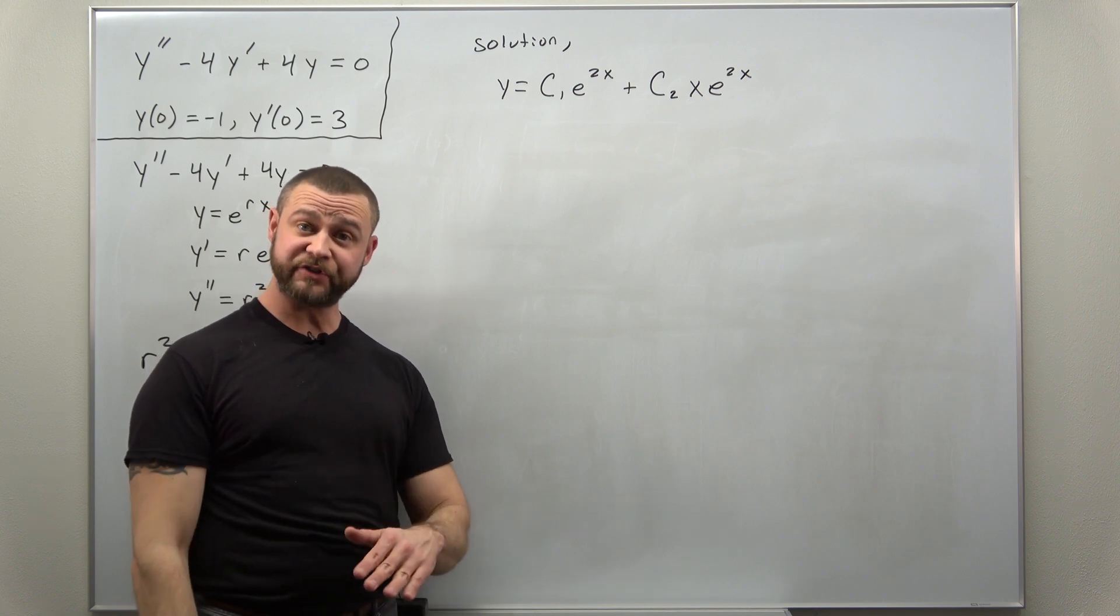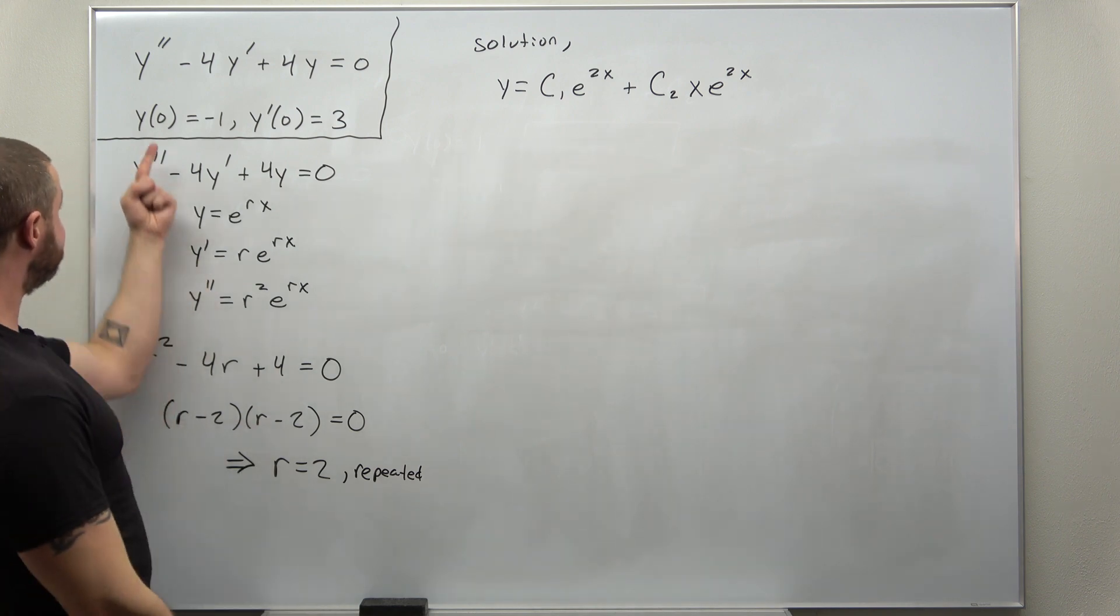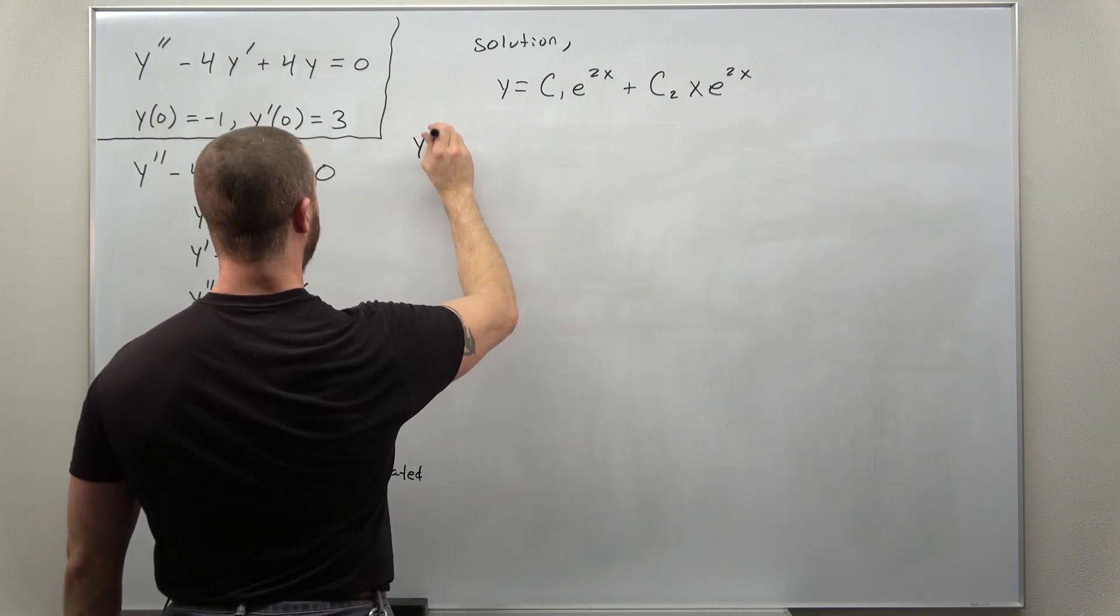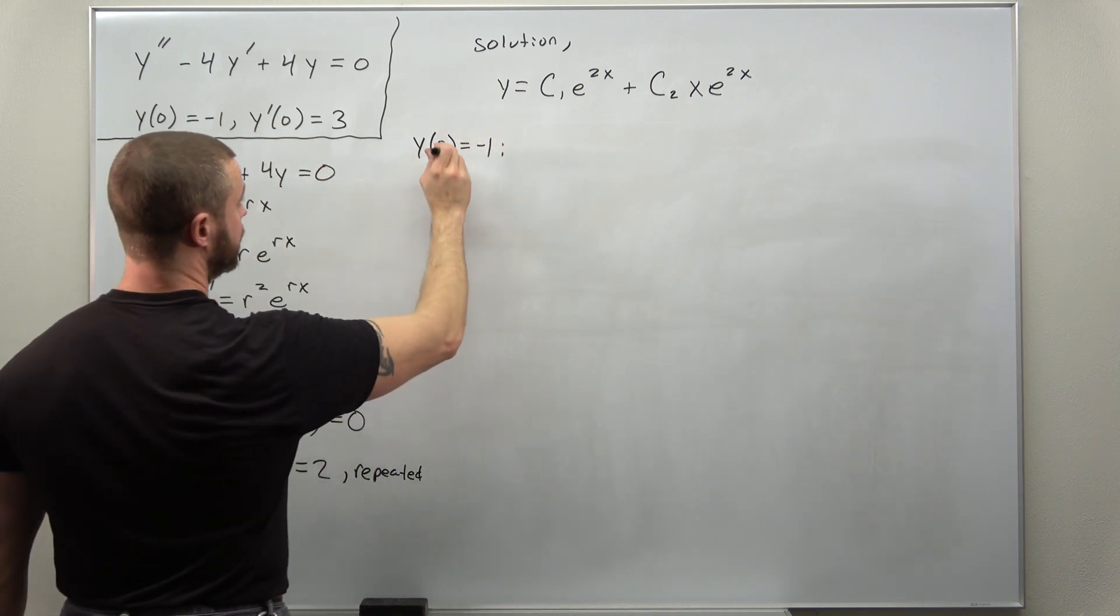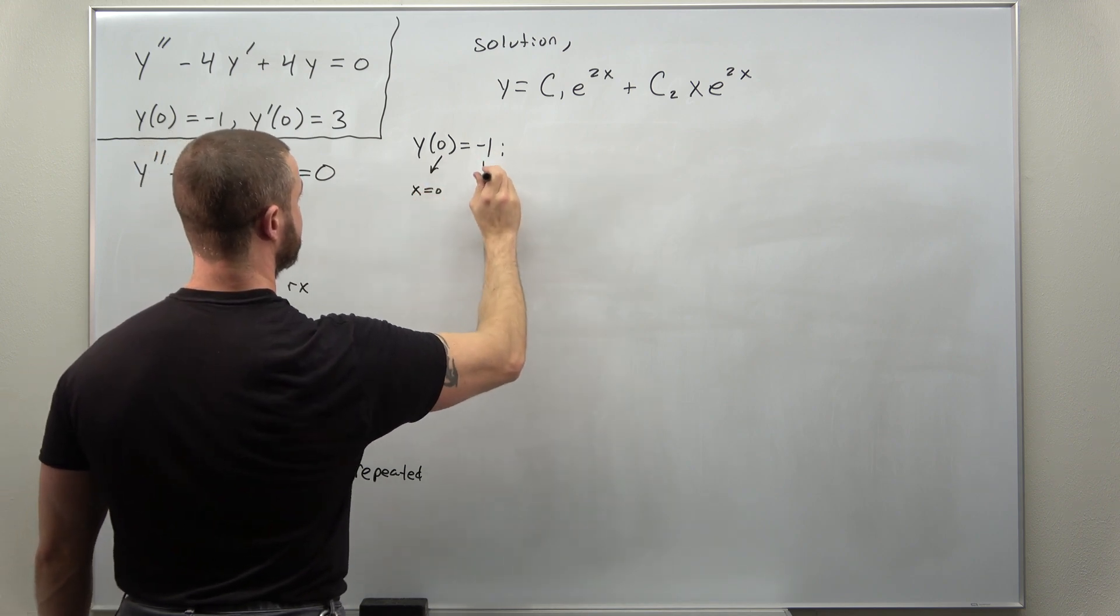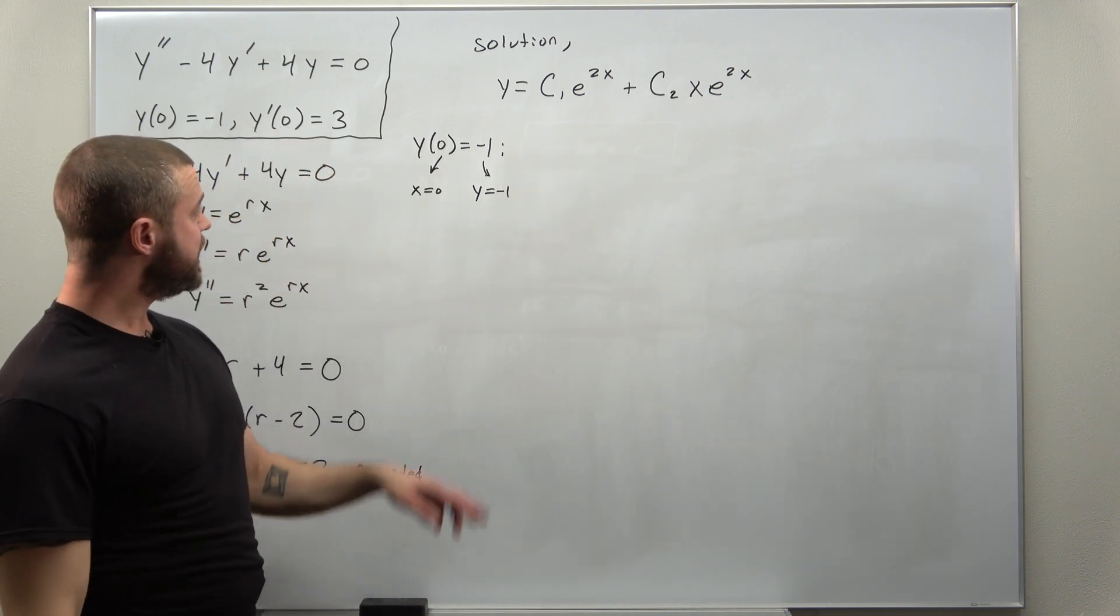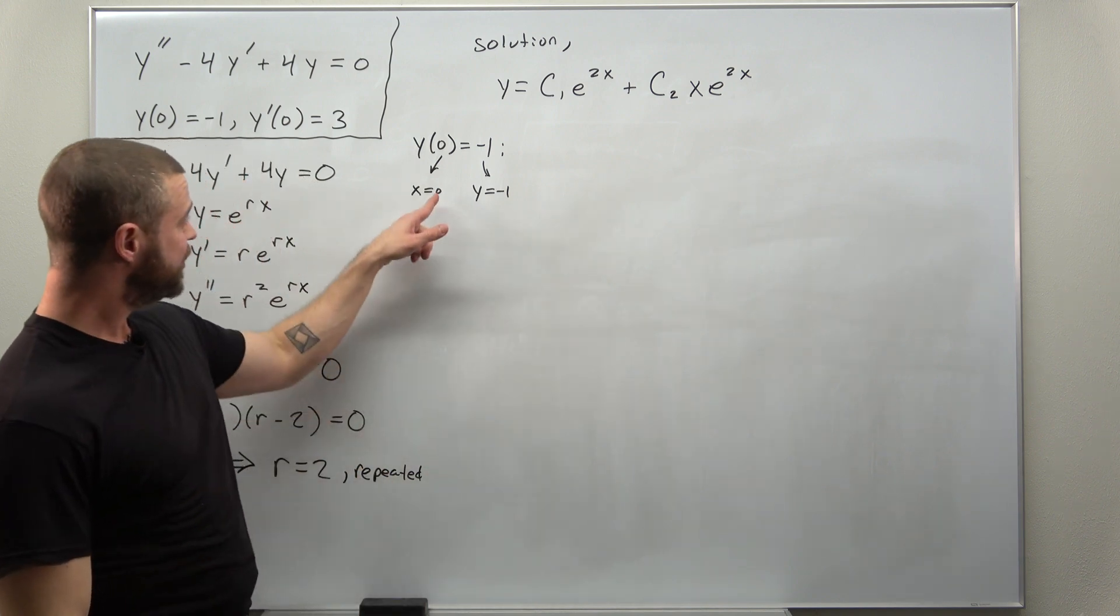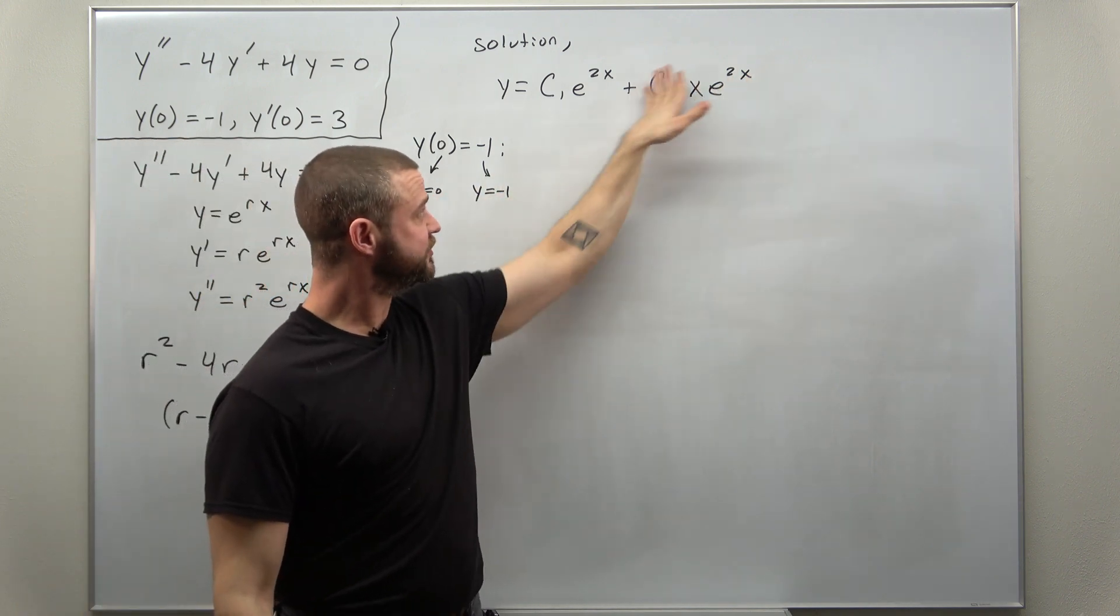All that's left for us to do is make use of the initial conditions. Let's go ahead and use the function initial condition so y of 0 equals negative 1. We're gonna plug in x as 0 and y as negative 1, and what's nice about this case of a repeated real solution, when x is 0 notice that factor of x just kills off that whole term.